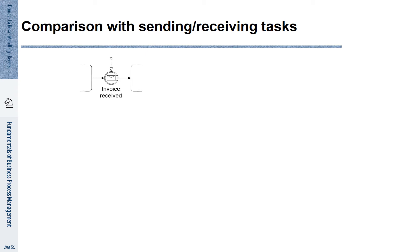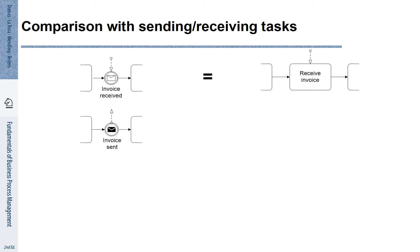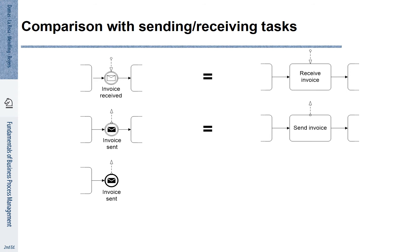This is very related to message flow. Let's see how the different message events relate to them. If an invoice is received, there is an alternative way for representing this — this intermediate event can also be shown as an activity for receiving the invoice, and this is semantically equivalent. An invoice is sent by passing the message to somebody else, which is also equivalent to showing the same behavior as an activity. When it comes to the end of the process, we can show that an invoice is sent to someone else, which is the same as sending an invoice and then completing with an end event.